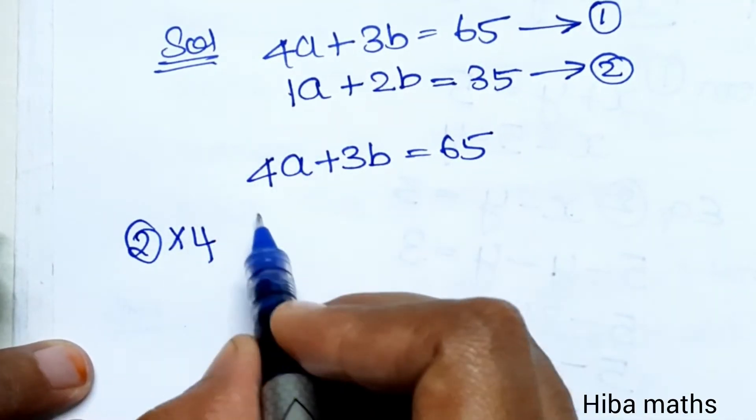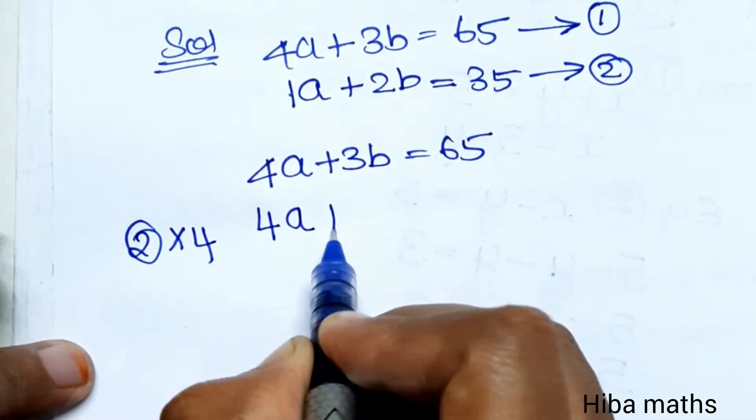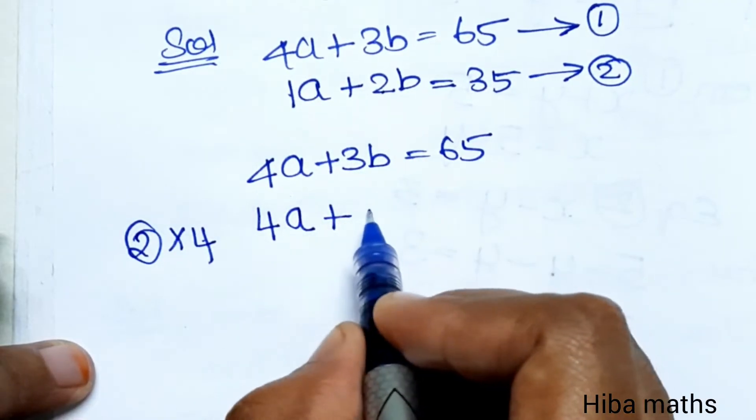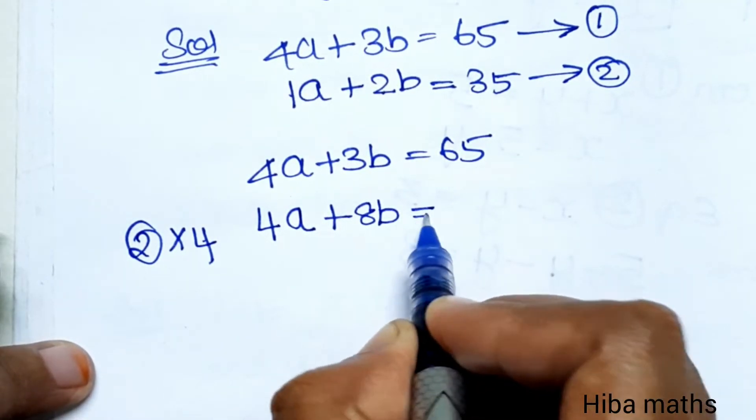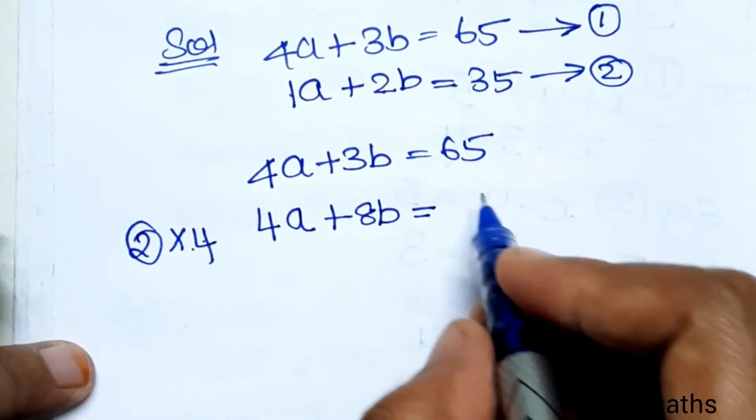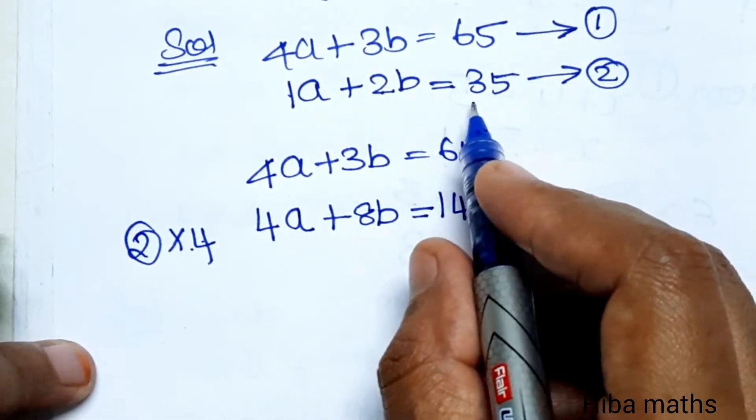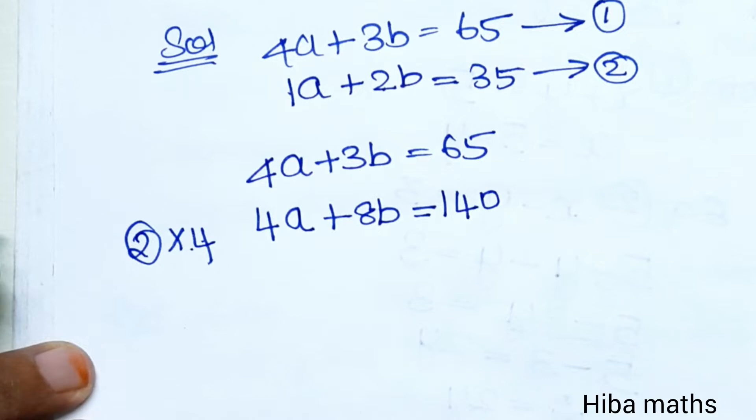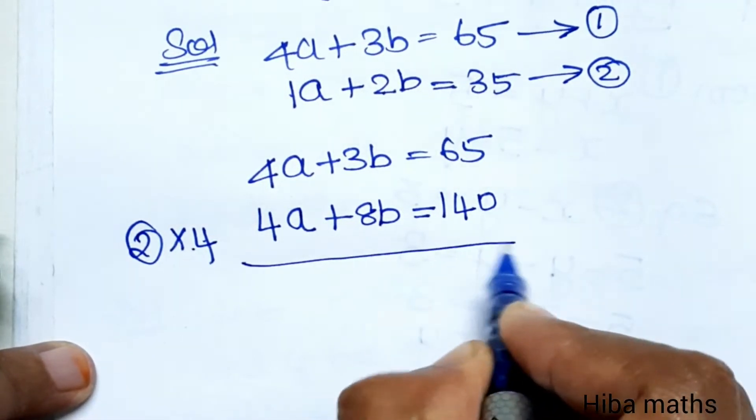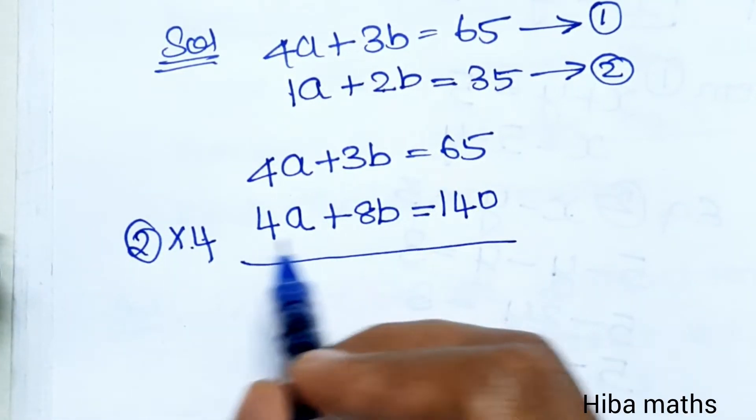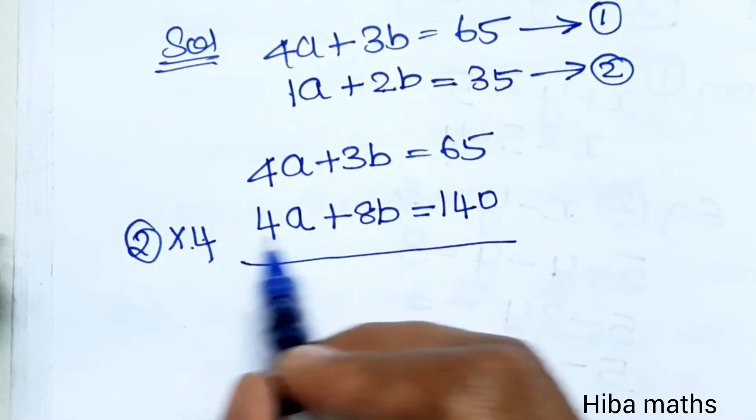Second equation multiplied by 4: 4 times 1 is 4a, plus 4 times 2 is 8b, equals 35 times 4. 35 times 4 is 140. So 4a plus 8b equals 140.